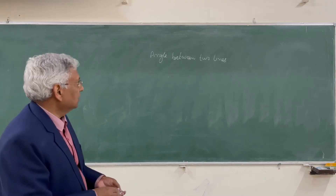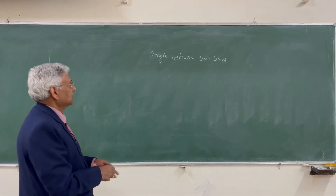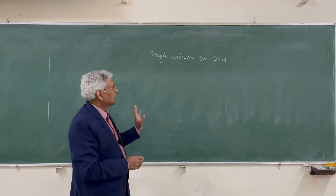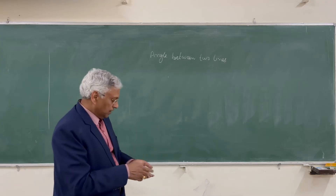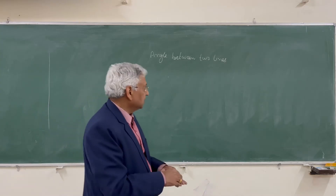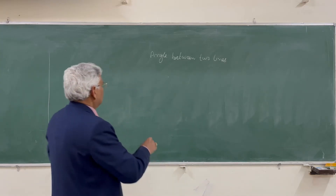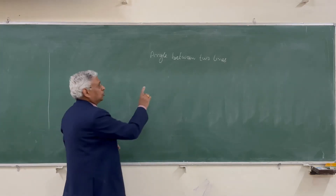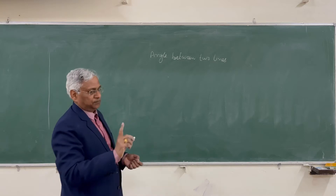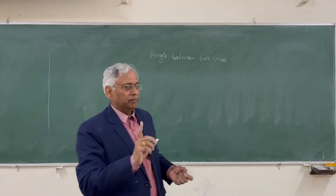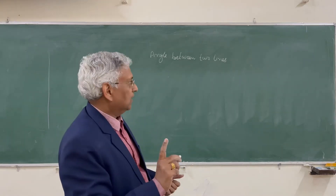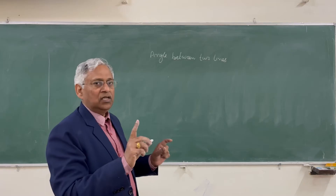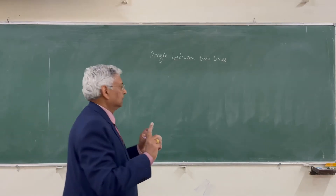Today in this session we will discuss how to determine the angle between two lines. The angle between two lines is the true angle made by the two lines, and therefore it must be based only on true length.